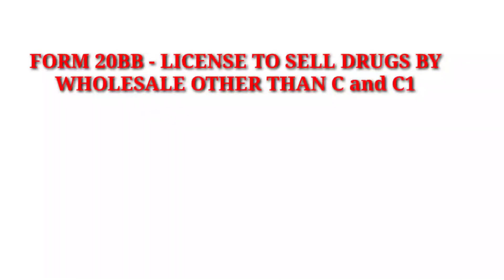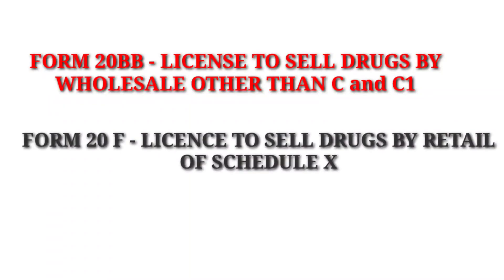Form 20BB is used to issue a license to sell drugs by wholesale, other than Schedule C and C1. The next form is Form 20F. This is used to issue a license to sell drugs by retail of Schedule X — that is, for retail sale of Schedule X drugs, Form 20F is used for issuing the license.